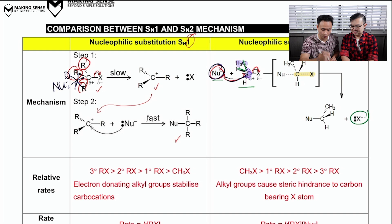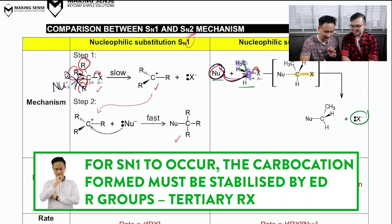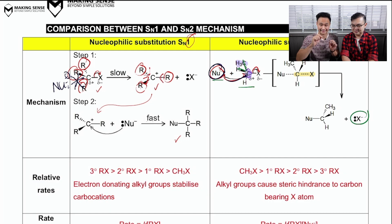that CX bond now breaks heterolytically, right, to give you that carbocation which is stabilized by your electron donating alkyl groups, dispersing that positive charge and stabilizing your carbocation. Right.